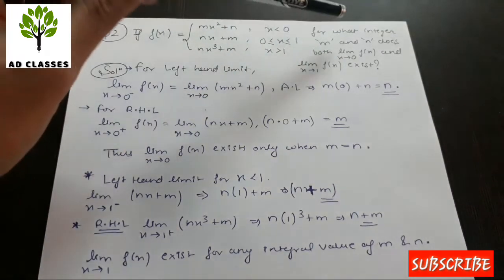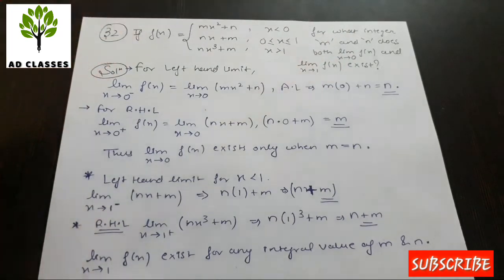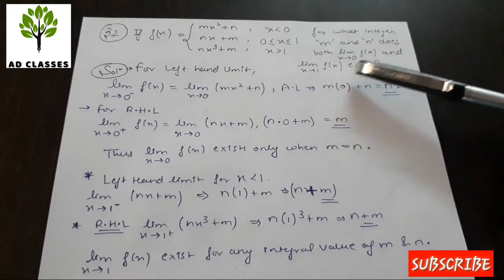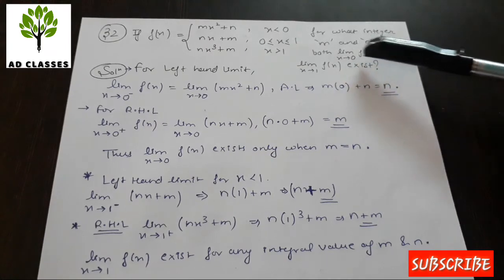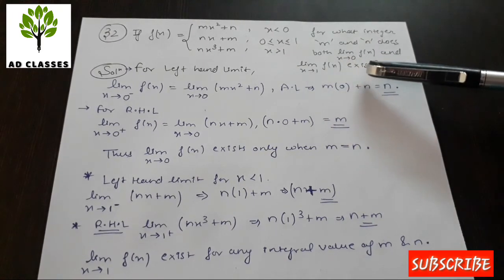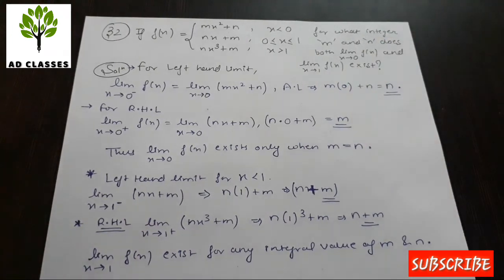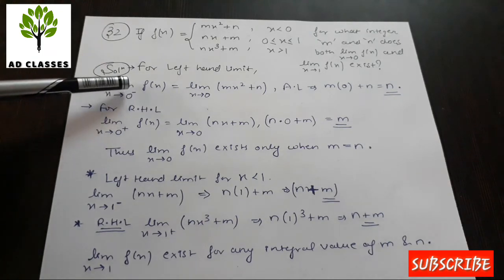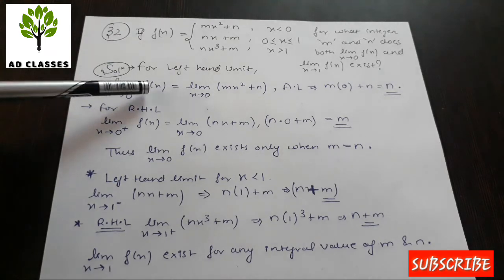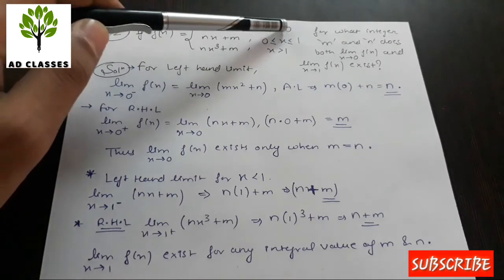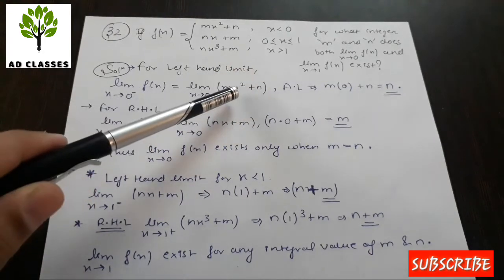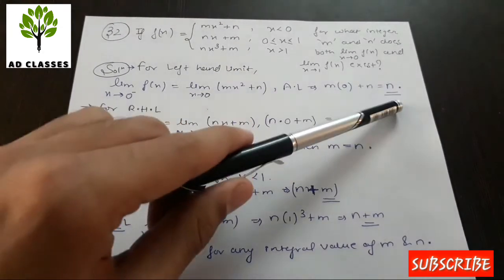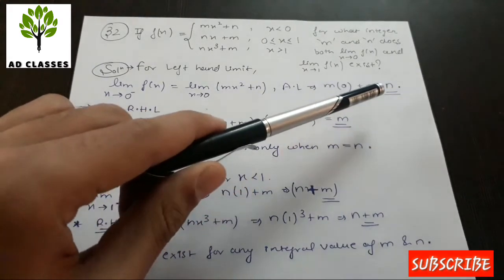For what integers m and n do both limit as x tends to 0 and limit as x tends to 1 of f(x) exist? For x = 0, the Left Hand Limit uses the first piece (mx² + n). Applying the limit with x → 0 gives mx²→0, so LHL = n.